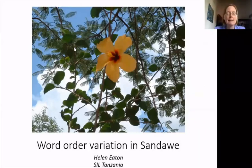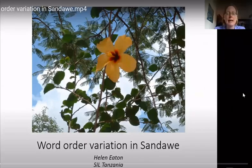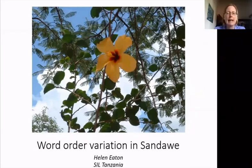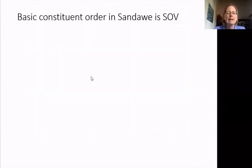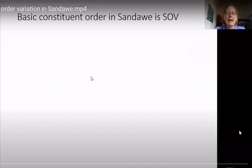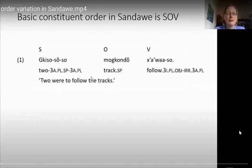I'll start with some comments about basic constituent order in Sandawe and how that interacts with subject marking, morpheme placement and information structure, and then I'll look at some word order issues relating to noun phrases, conjunctions and verbs. If we define basic constituent order as the order of subject, verb and object in affirmative declarative main clauses which are pragmatically unmarked, then Sandawe has the basic order S-O-V, as shown in this example.